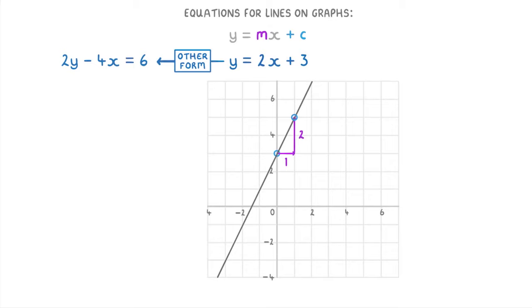However, if we had been given our equation in this other form, 2y minus 4x equals 6, then we couldn't have used this technique to sketch it. Instead, we'd have had to rearrange it into the form of y equals mx plus c first.